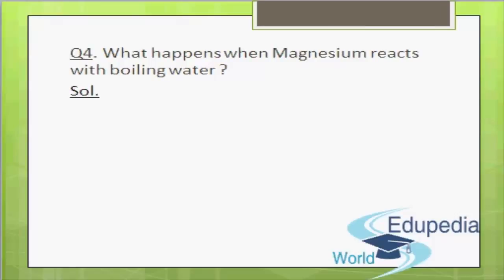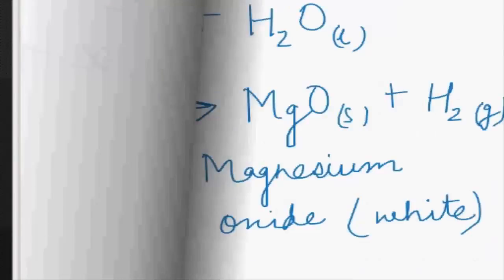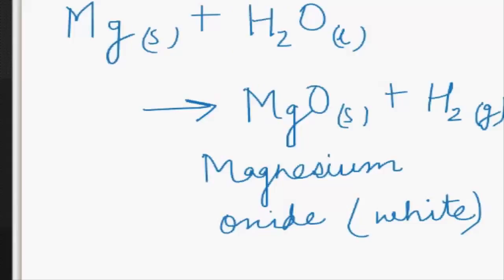Question number 4: What happens when magnesium reacts with boiling water? Magnesium oxide will be formed. When magnesium, which is in solid form, reacts with boiling water, magnesium oxide, which is white in colour, along with hydrogen gas will be formed.